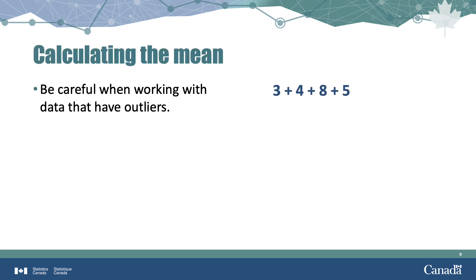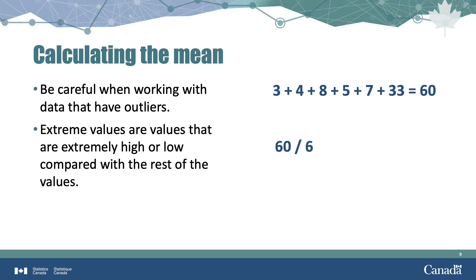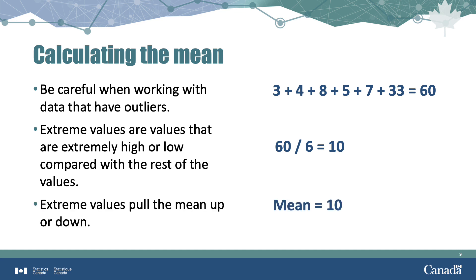It is important to note that the mean can be influenced by outliers, or values that are extremely high or low compared with the rest of the values. An extremely high value in the data may cause the mean to increase to the point where it no longer represents the overall data. Notice here where the last value in the sum is 33, when on the previous slide it was 3. This change could be accurate, but it could also be an error. Regardless, the sum of the six values is now 60, and the mean has doubled in size from 5 to 10. Therefore, it is important to check for outliers before deciding to choose the mean to measure central tendency.